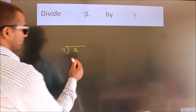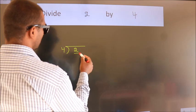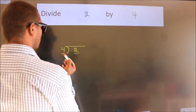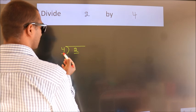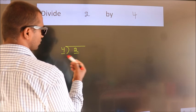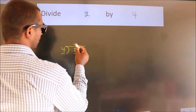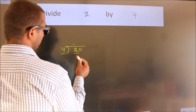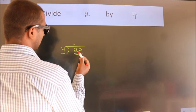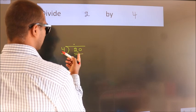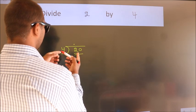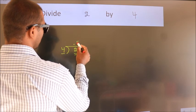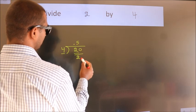Here we have 2, here 4. 2 is smaller than 4, so what we do is we put a dot and take 0. So we get 20. When do we get 20 in the 4 times table? 4 fives are 20.